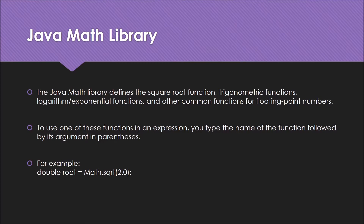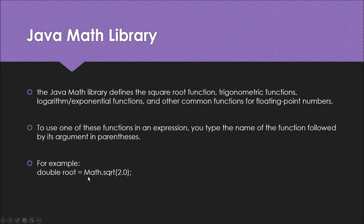The Java math library defines the square root function, trigonometric functions, logarithmic and exponential functions, and other common functions for floating point numbers — meaning float and double data types. To use any one of these functions in an expression, you type the name of the function followed by its argument in parentheses. For example, if you want to take the square root of 2, you write Math.sqrt(2).